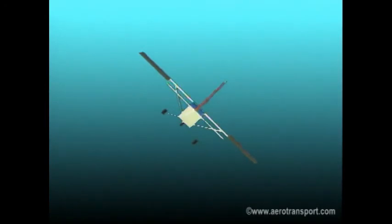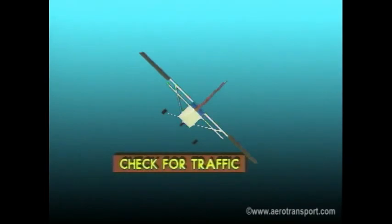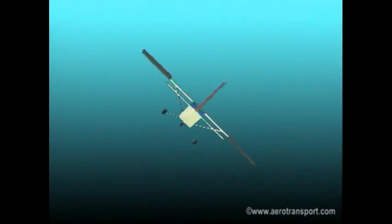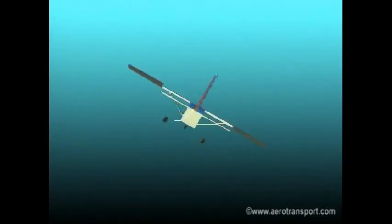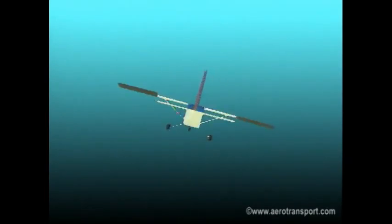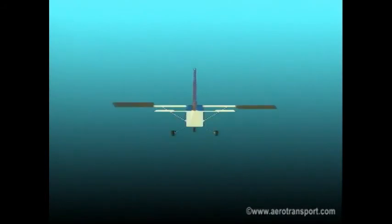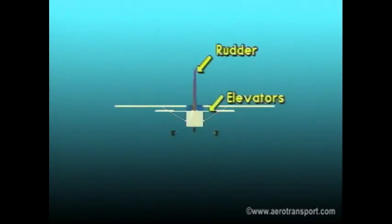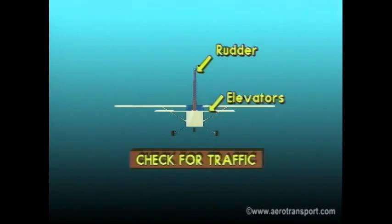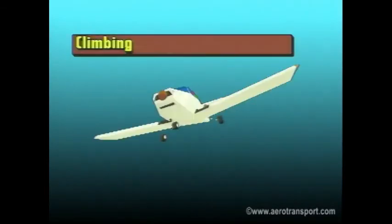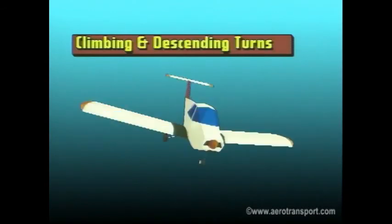To recover from a turn, first look out for other aircraft. Next, use the ailerons to return the aircraft to level flight. Control adverse yaw with the rudder. Maintain your pitch with the elevator. Keep the aircraft straight and look out for other traffic. Now trim the aircraft. Climbing and descending turns are made in a similar manner to level turns, but there are some differences.